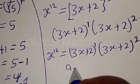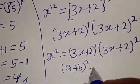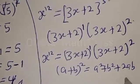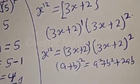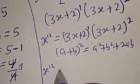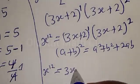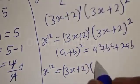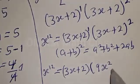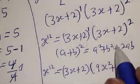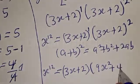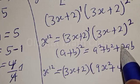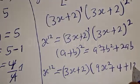Remember, (A plus B) squared equals A squared plus B squared plus 2AB. Here our A is 3s and our B is 2. So substituting: s raised to power 12 equals (3s plus 2) times (3s) squared plus 2 squared plus 2 times 3s times 2. That gives us (3s plus 2) times 9s squared plus 4 plus 12s.